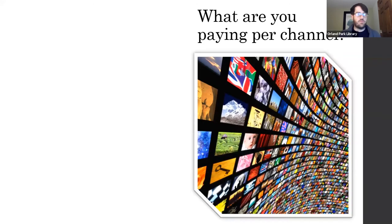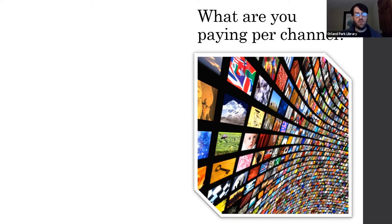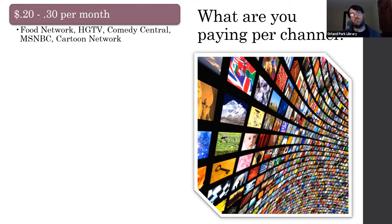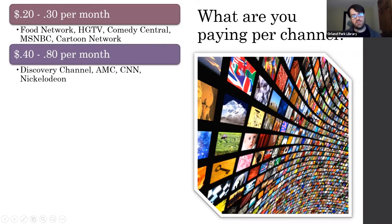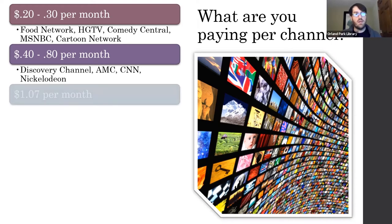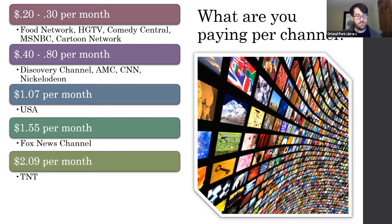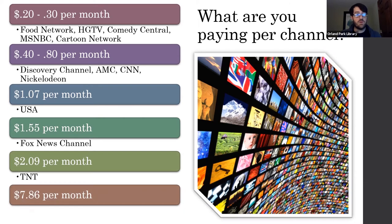This is probably my favorite bit of information tonight: what are you paying per channel? At 20 to 30 cents per month you're paying for the Food Network, HGTV, Comedy Central, MSNBC, and the Cartoon Network. From there, 40 to 80 cents per month covers Discovery, AMC, CNN, and Nickelodeon. Then $1.07 for the USA Network, $1.55 for Fox News, $2.09 for TNT, and $7.86 per month for ESPN. These numbers were accurate about six months ago and can fluctuate.